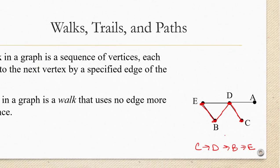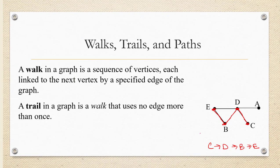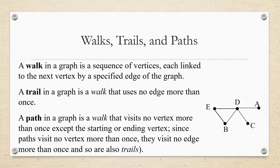So a trail in a graph is a walk that uses no edge more than once. A third way to navigate a graph is called a path. A path in a graph is a walk that visits no vertex more than once, except possibly the starting or ending vertex. Since paths visit no vertex more than once, they also visit no edge more than once. So not only is a path a kind of walk, it's also a kind of trail.